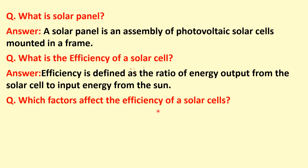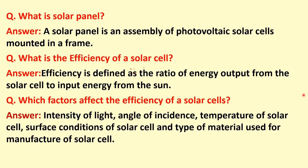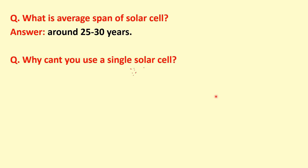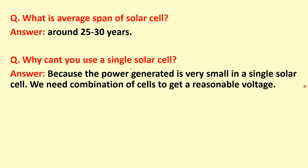Which factors affect the efficiency of a solar cell? The factors are: intensity of light, angle of incidence, temperature of the solar cell surface, condition of the solar cell, and type of material used for manufacturing. What is the average life of a solar cell? It is around 25 to 30 years. Why can't we use a single solar cell? Because the power generated is very small in a single solar cell and we need a combination of cells to get a reasonable voltage.